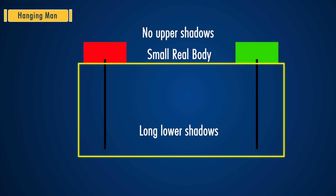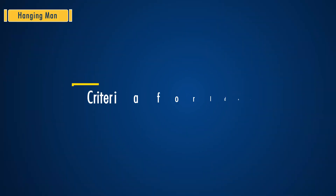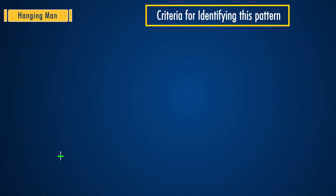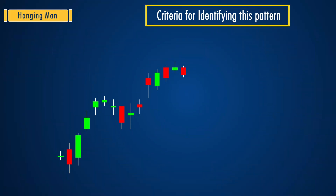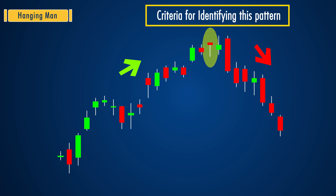This pattern provides an opportunity for traders to square their buying position and enter a short position. The criteria for identifying this pattern: first, there should be no or little upper shadow. The lower shadow should be long, at least twice the length of the real body. The real body should be on the upper side of the candlestick.